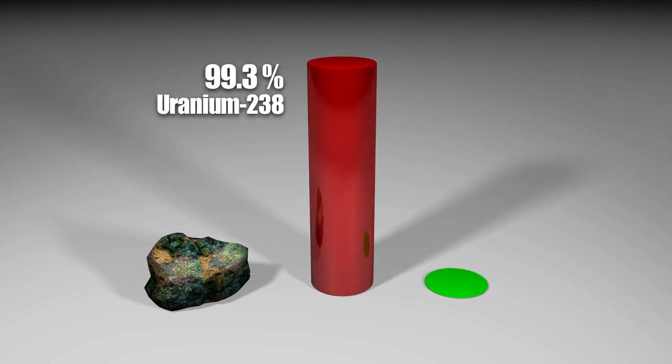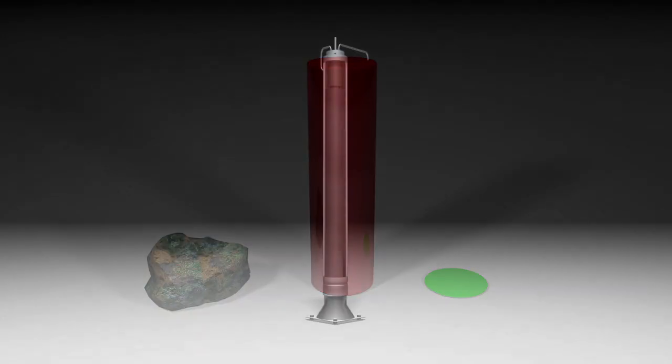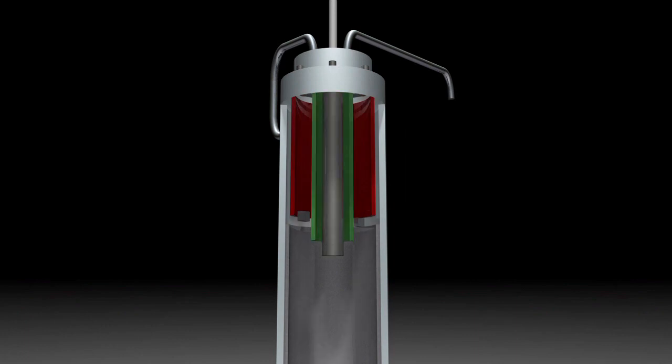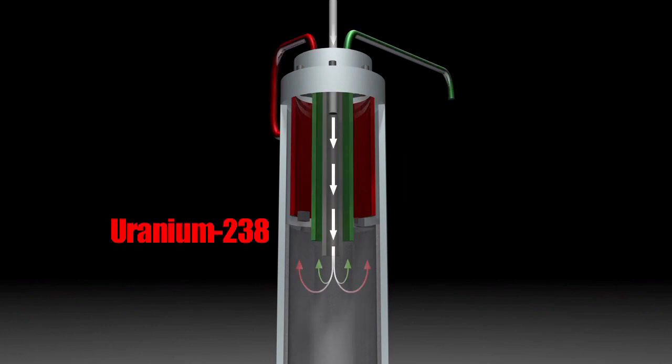99.3% is uranium-238 and less than 1% uranium-235, used to produce nuclear energy. To increase the percentage of uranium-235, centrifuges are used in a process known as enrichment.